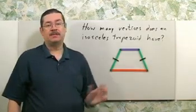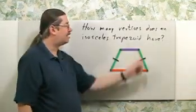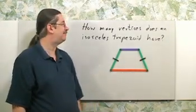An isosceles trapezoid is a special case of a quadrilateral. A quadrilateral has four sides and four vertices. So that answers the question: four.